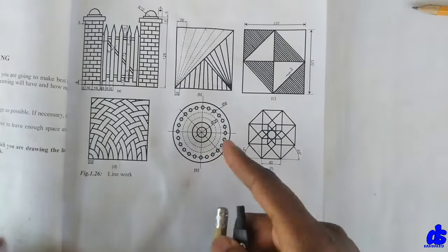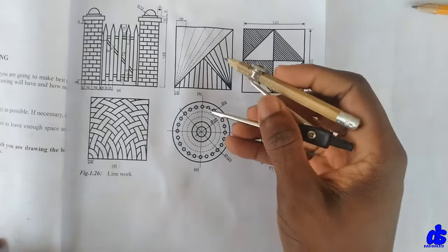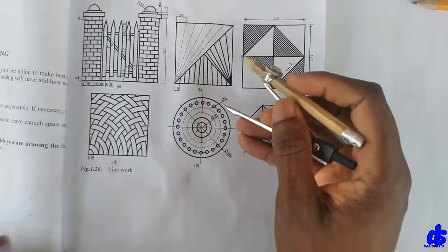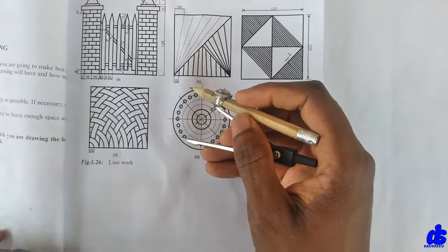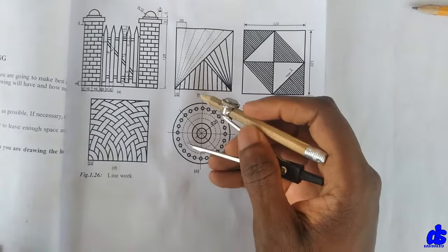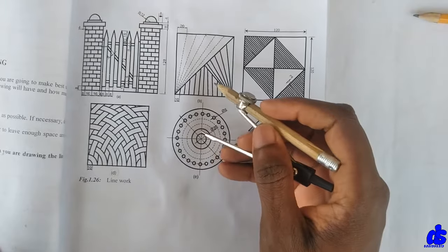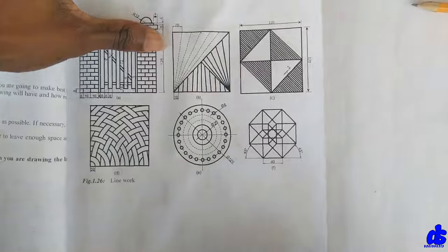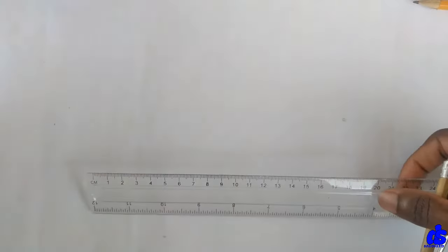Right, so the outer circle has a diameter of 120 and we have these inner circles here. Now since this is 120, this diameter is going to be 100, this is going to be 80, 60, 40, and finally 20. Right, let's start drawing.